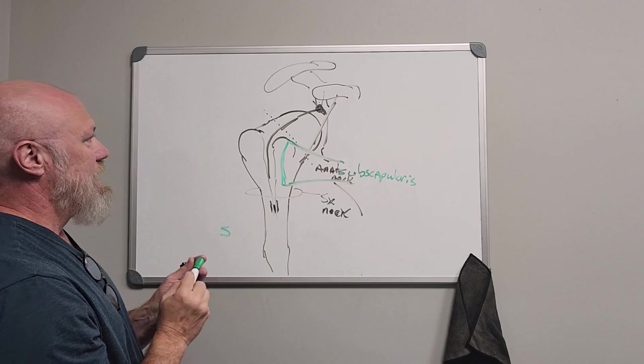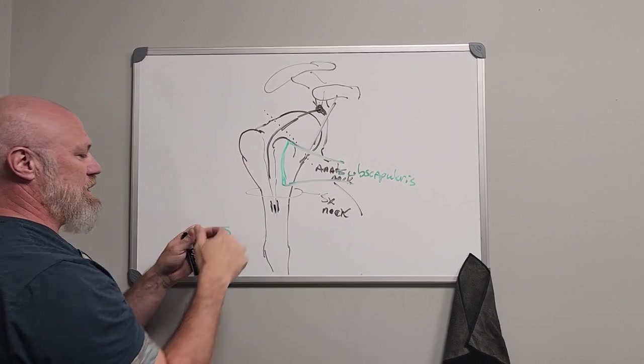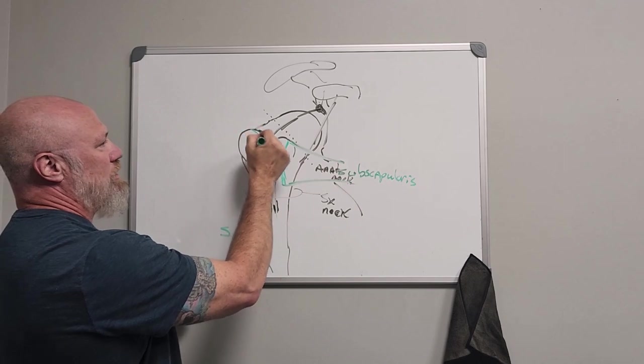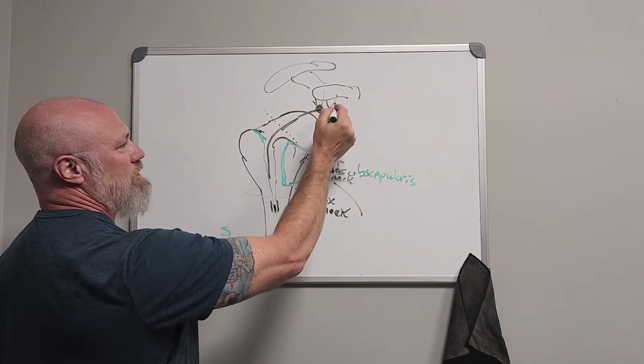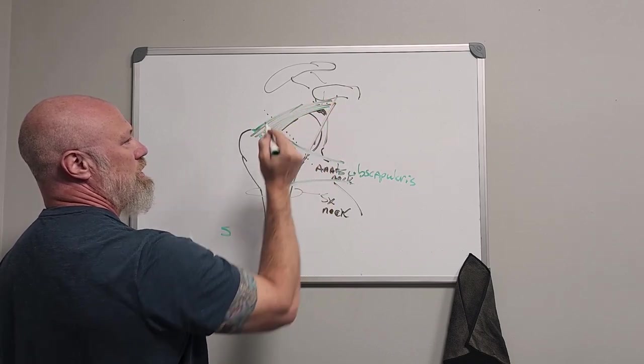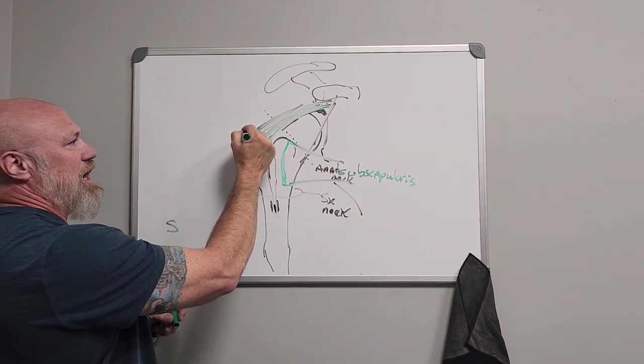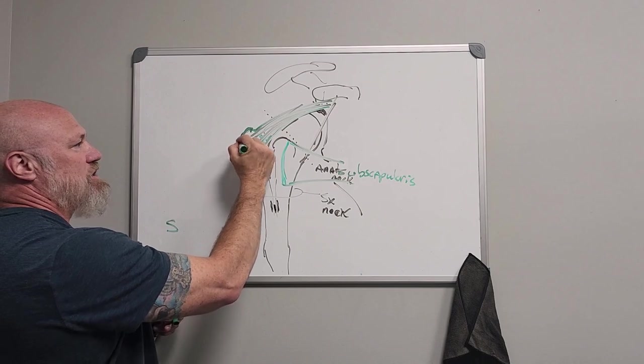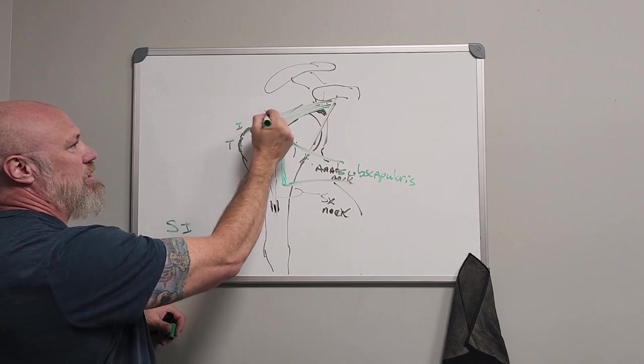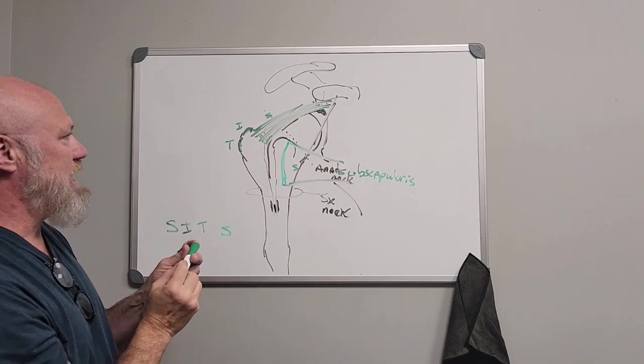And then from the posterior aspect on the greater tubercle there, you're going to see your supraspinatus coming through this little tunnel here and sitting on the greater tubercle. That's the other S for SITS. And then just behind that will be the infraspinatus, and on the greater tubercle, the teres minor.